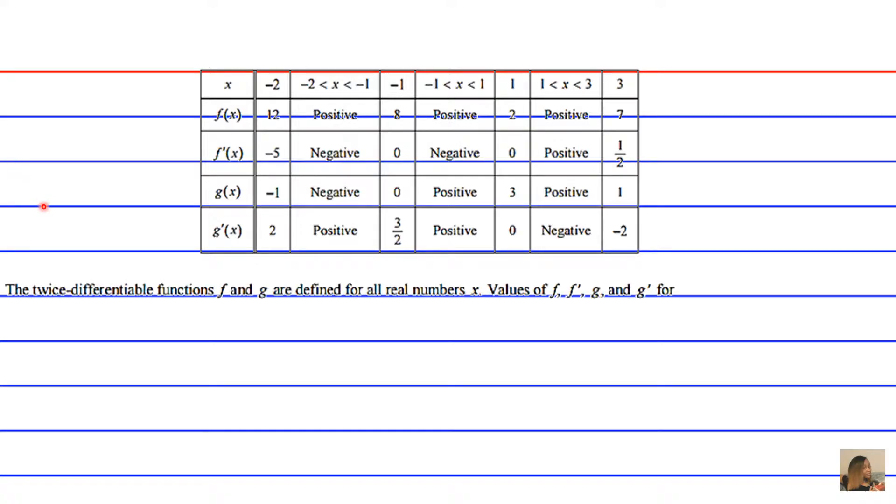The twice differentiable functions f and g are defined for all real numbers x. Values of f, f prime, g, and g prime for various values of x are given in the table above.